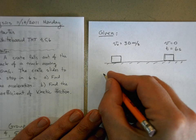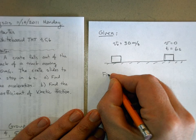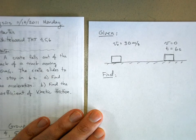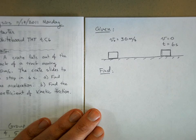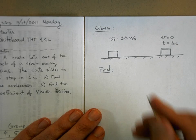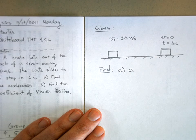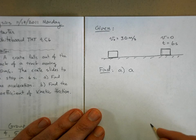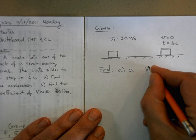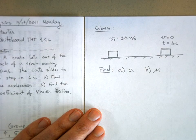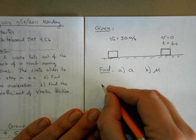So what are we trying to find? Well, we want to find for part a we want to know what is the acceleration of the crate, and then for b we want to find mu.